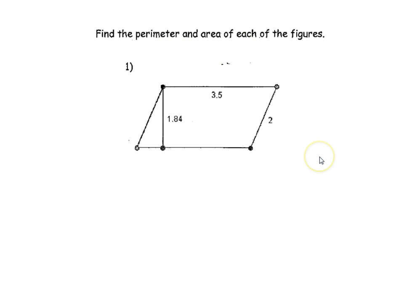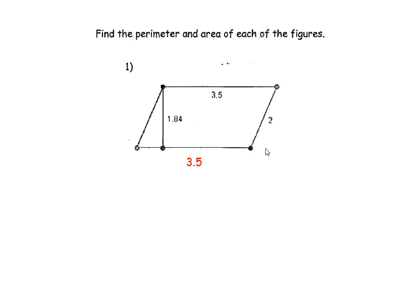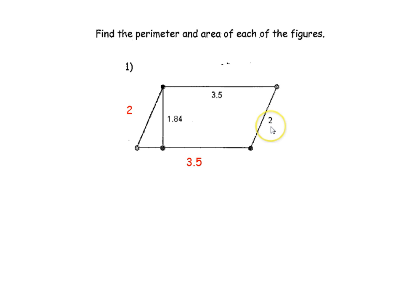I'm going to start with the perimeter, beginning with things that I know. I know this side right here is 3.5, and since this is a parallelogram, this side here must also be 3.5 — that's what makes a parallelogram a parallelogram. Similarly, with this missing side length, I know this side is going to be 2, because the opposite side is also 2, and since it's a parallelogram, that has to be 2 as well.